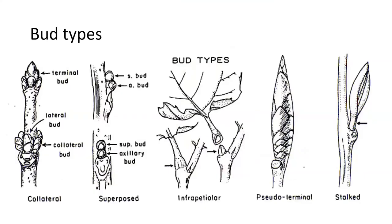Here are more examples of bud types: collateral, superimposed, and infra-petiolar. We'll learn at least one tree with that term — that's not one I'll ask you on an exam, but it's interesting to see if a leaf doesn't seem to have a bud it might actually be inside the petiole. That's the case for sycamore. Then we have pseudo-terminal buds — look for the little leaf scar to determine if it's pseudo-terminal. We also have examples of stalked buds. All of these bud types can point you toward identifying a species.